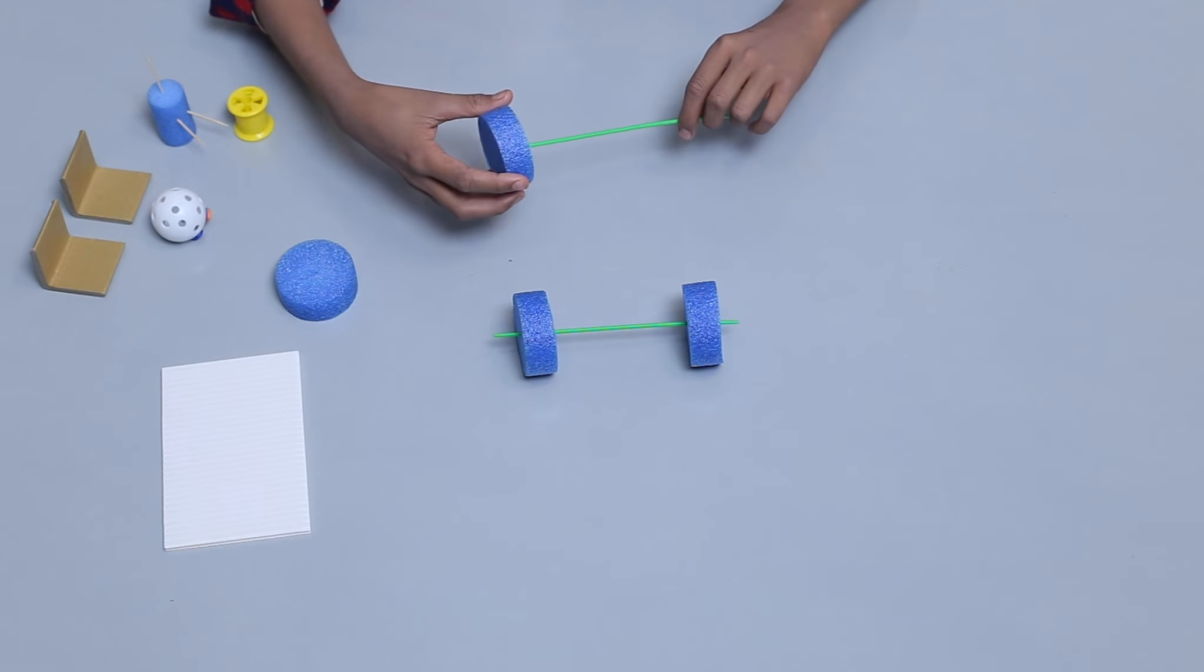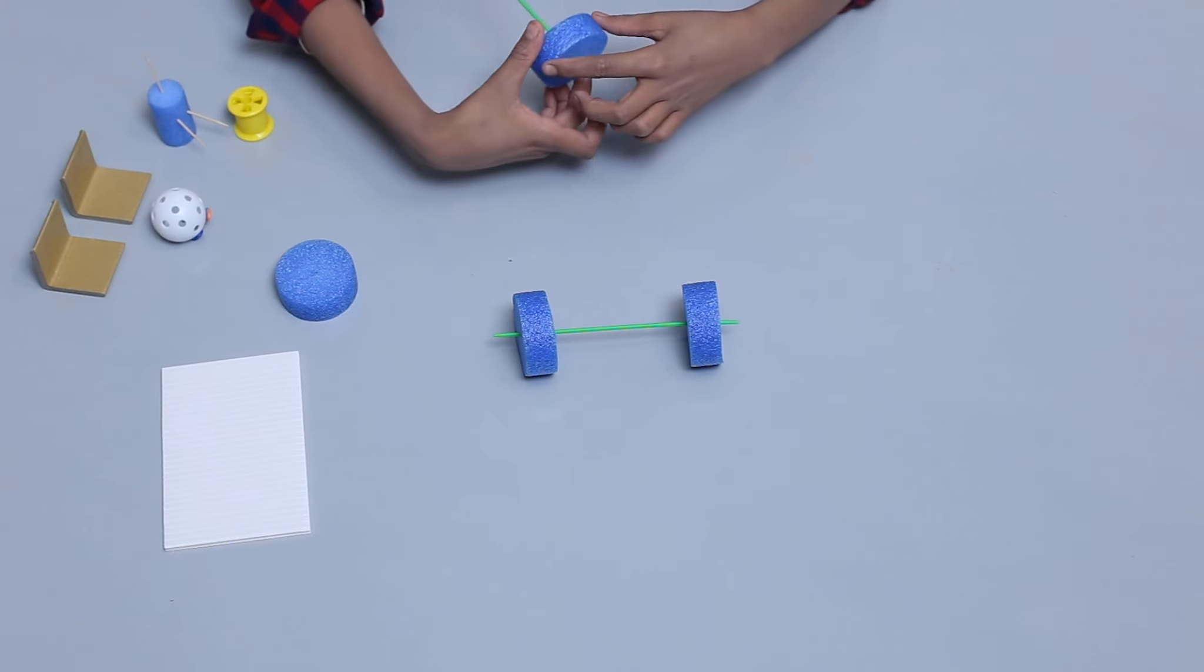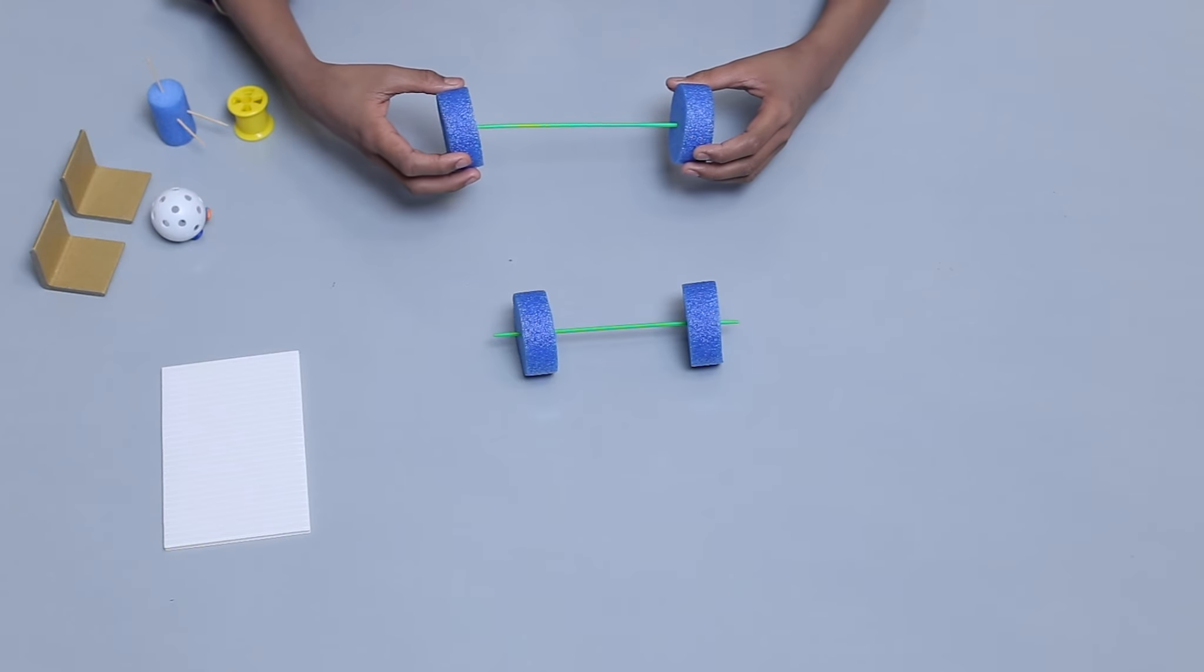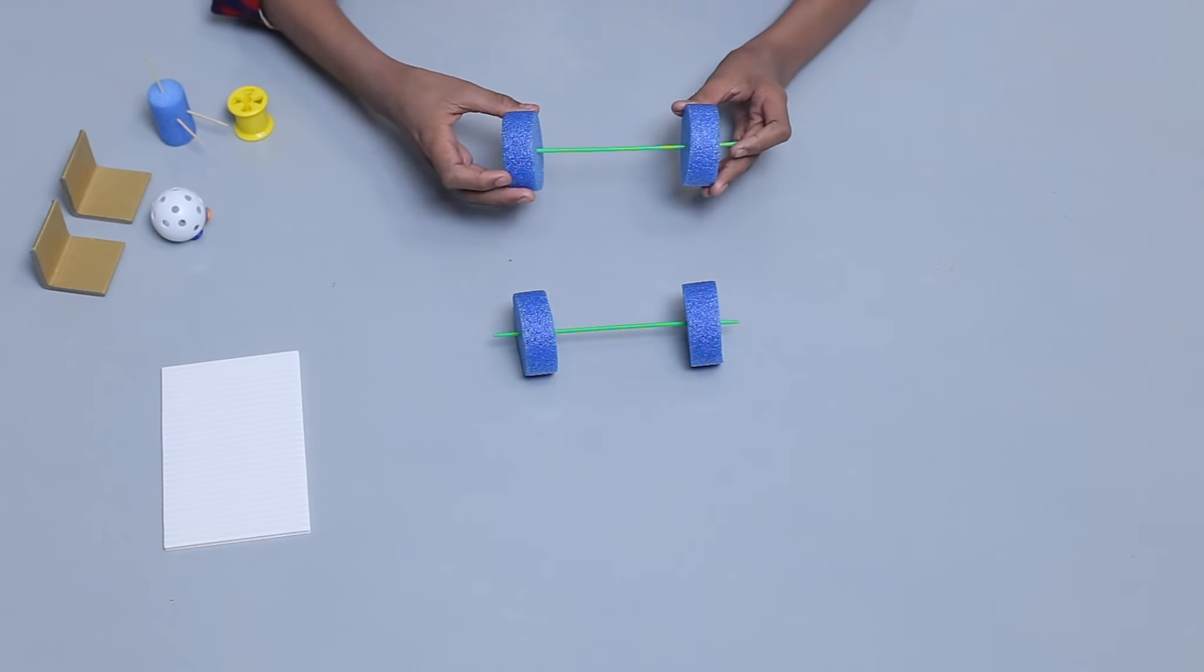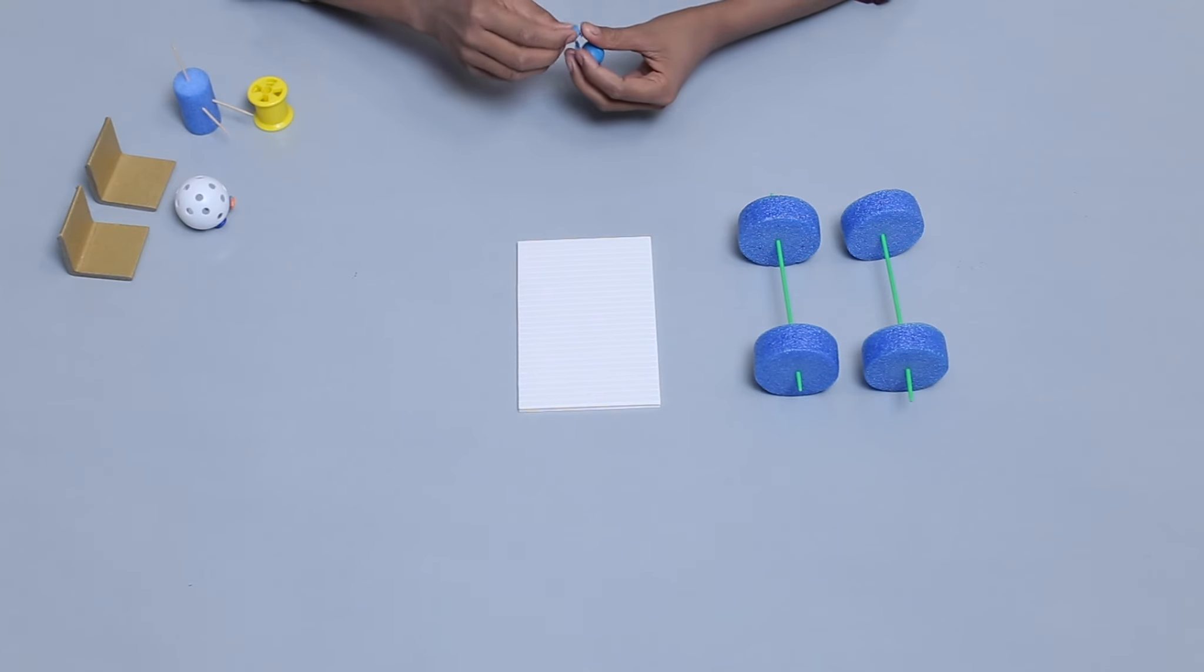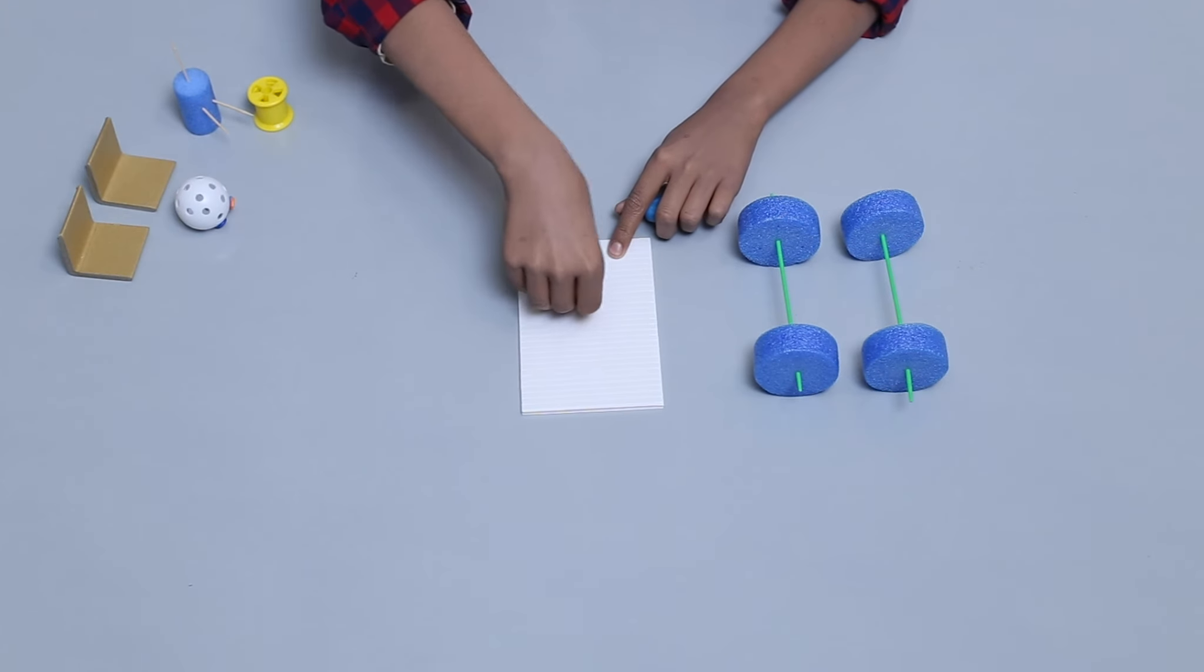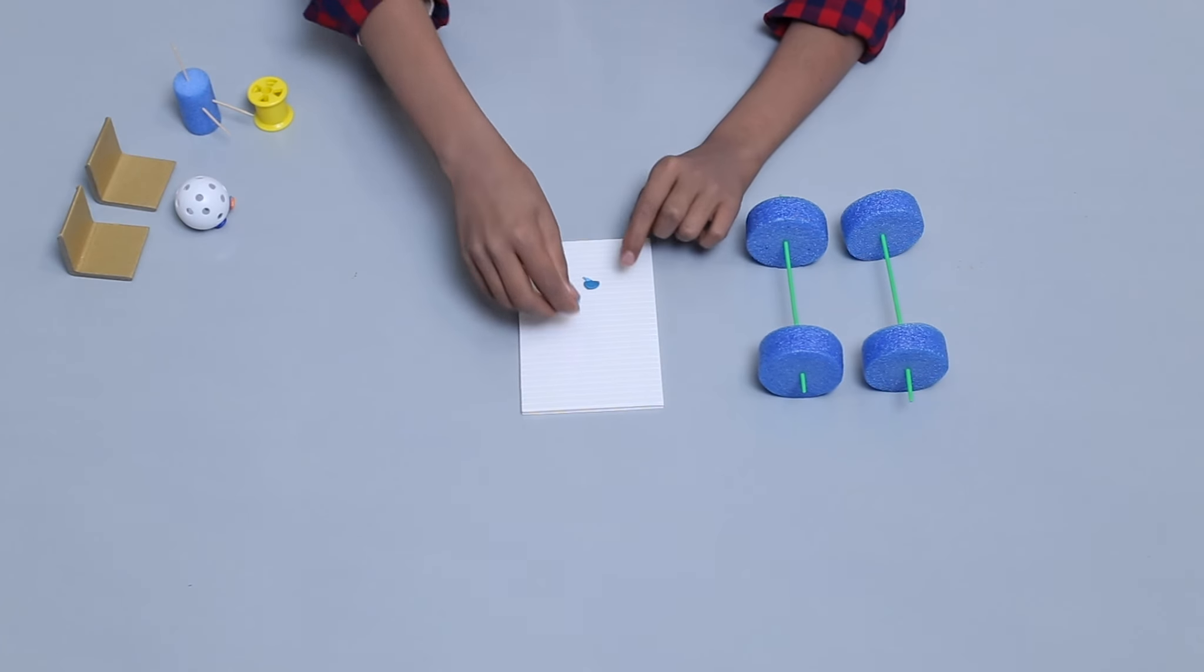Now, to make the wheels and axles, use 4 foam wheels and 2 plastic sticks. Stick sticky tack on the cardboard to make the 2 seats using 2 cardboard angles.